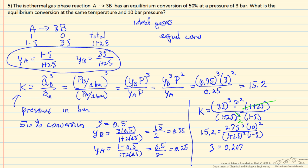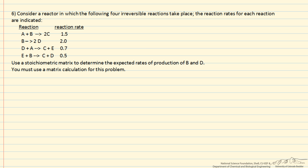In this problem we have 4 irreversible reactions, and we're given the overall reaction rates. We're asked to calculate the rate of production of B and the rate of production of D, and we want to use matrix notation because that's the notation that becomes particularly useful as we get to much larger sets of reactions. So we need a stoichiometric matrix which has the stoichiometry, so I'm just going to write up here so we don't get confused which species we're talking about.